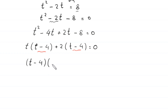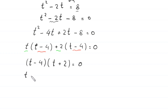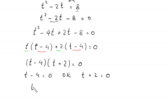Since t minus 4 is a common factor, we factor it out to get t minus 4, times t plus 2, equals 0. From here, either t minus 4 equals 0, giving t equals 4, or t plus 2 equals 0, giving t equals negative 2.